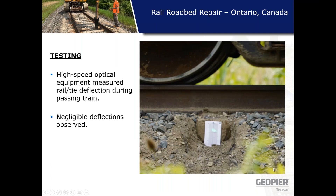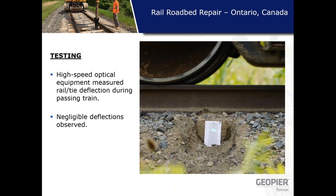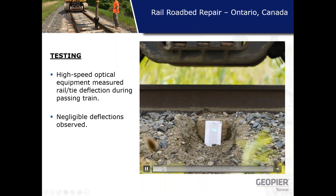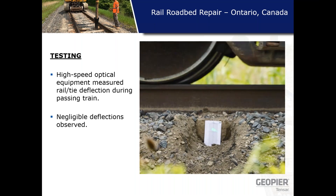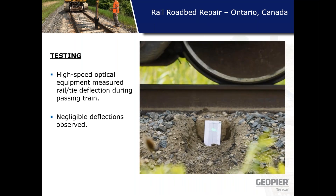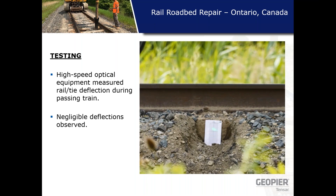Back-end testing was performed to monitor GeoSpike system performance long term. Immediately after re-ballasting, the line was put back into service and high-speed optical equipment was used to measure rail and tie deflection during passing trains. The laser was set at a distance isolated from ground motions associated with the train. A short video shows very little movement noted during passing wheel loads — the green laser in the middle showed negligible deflections observable to the naked eye. Computer software was then used to reduce the data for actual measurements.